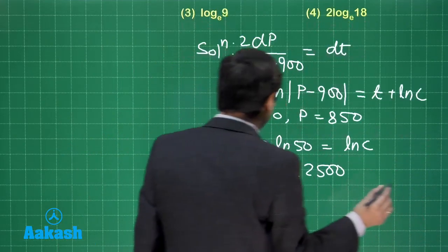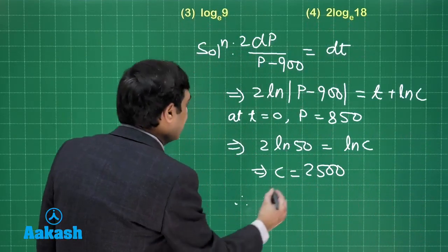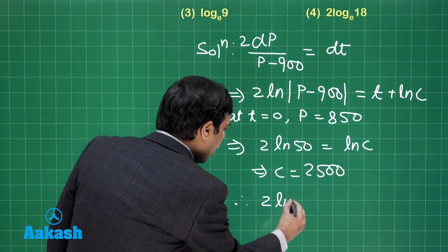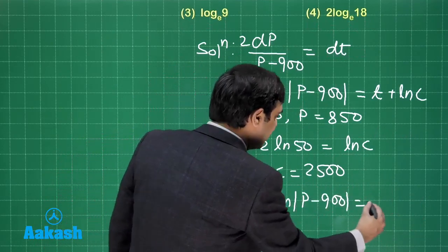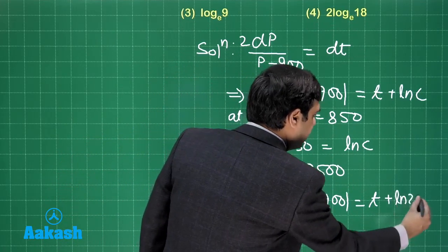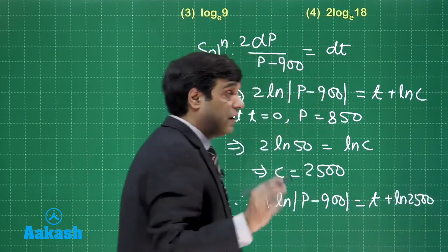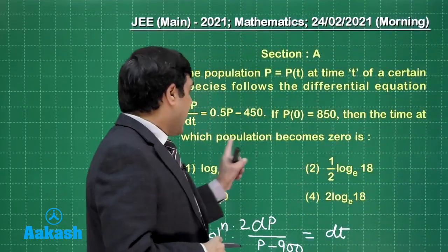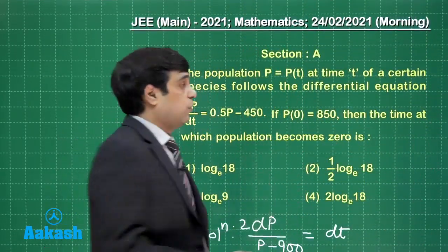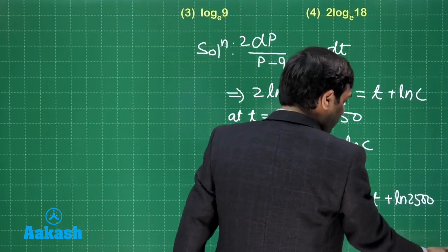So let us put it back to get the final result. This is 2 log mod of P minus 900 is equal to t plus log 2500. Now question is saying the time at which population becomes 0. So P equals 0 is what we are looking for.